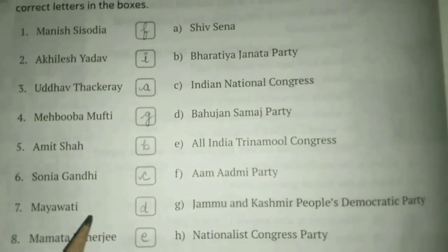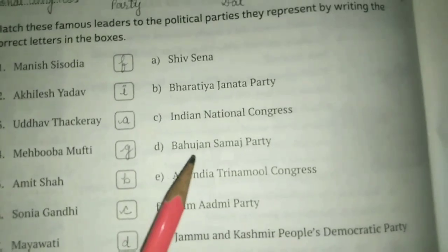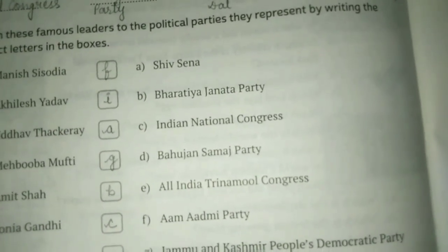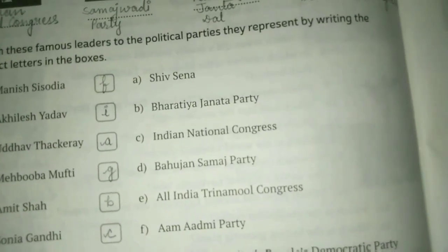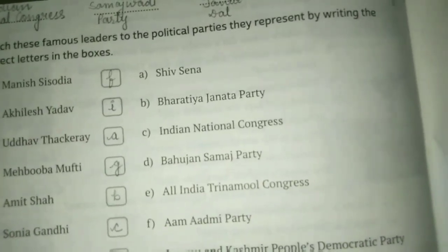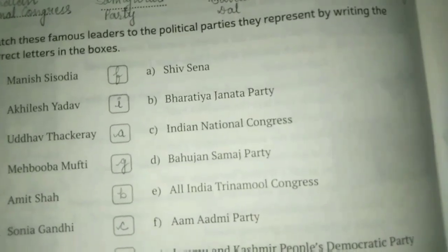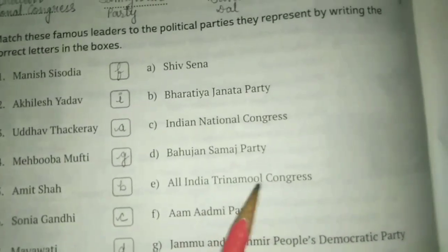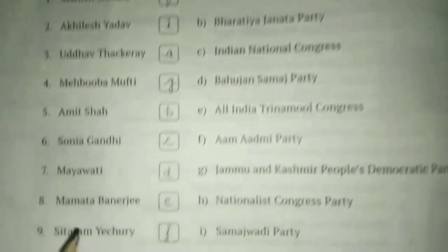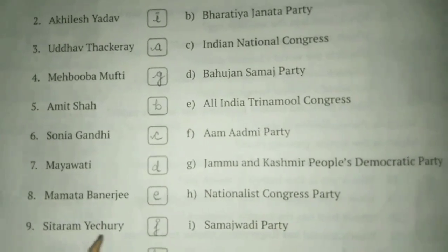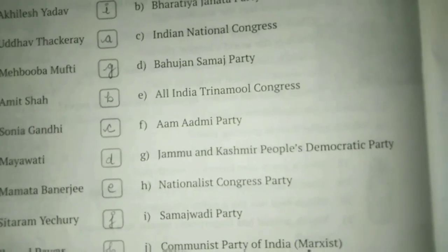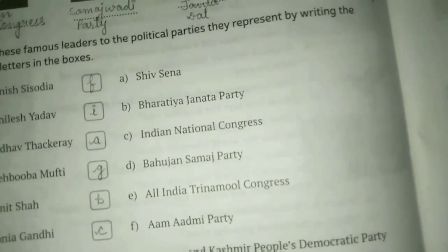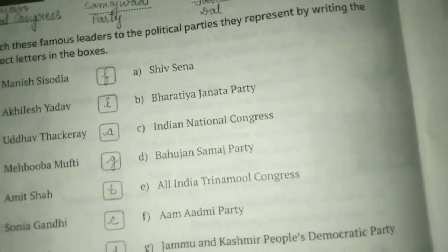Seventh, Mayawati — she represents Bahujan Samaj Party. This party is a national-level political party in India formed to represent Bahujans, referring to Scheduled Castes, Scheduled Tribes, and other backward castes, along with religious minorities. Eighth, Mamata Banerjee — she represents All India Trinamool Congress. Ninth, Sitaram Yechury — he represents Communist Party of India (Marxist). It is one of the national parties of India, which emerged from a split from the Communist Party of India in 1964.